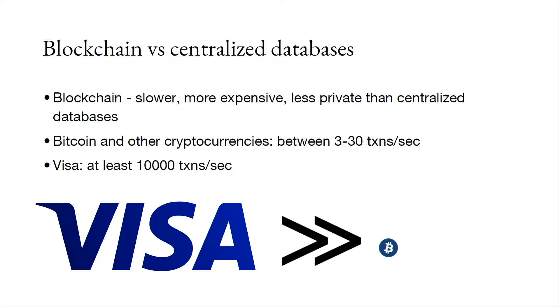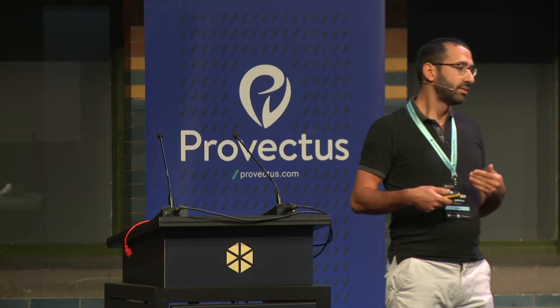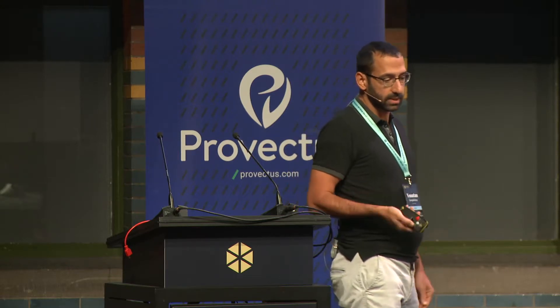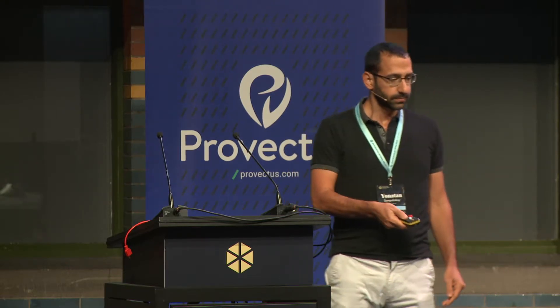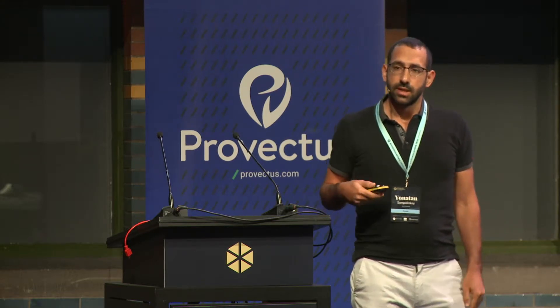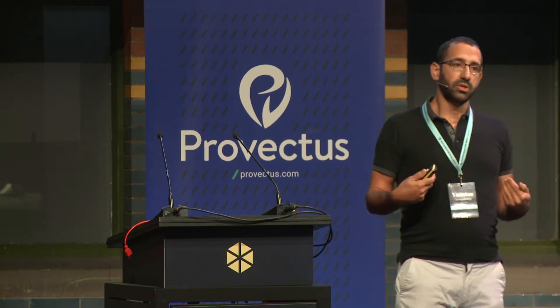Today Visa's capability is 10,000 transactions per second, and Bitcoin is nowhere near that. So when someone says blockchain is more secure — it's not more secure per se, it's not more private per se, and it's slower. But still, it's very valuable. The main value proposition is that we can achieve many properties of databases in a trustless manner.